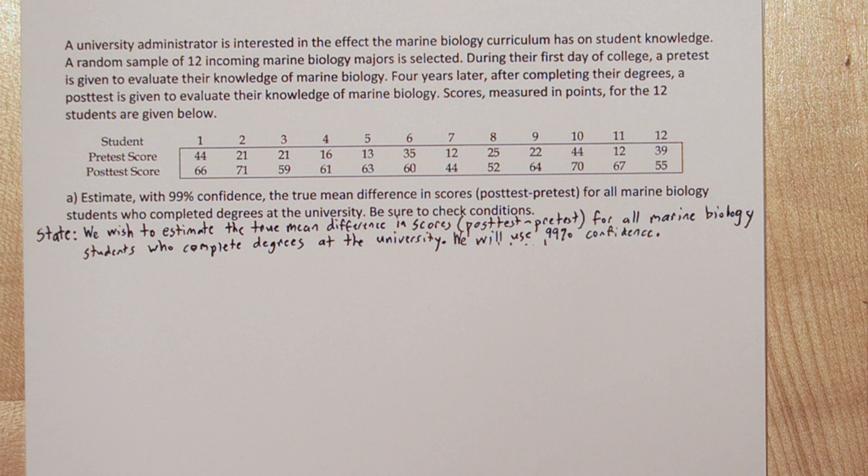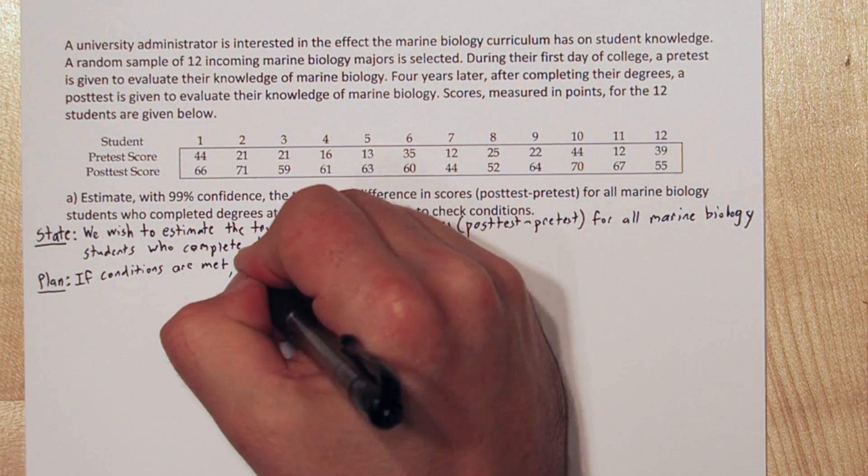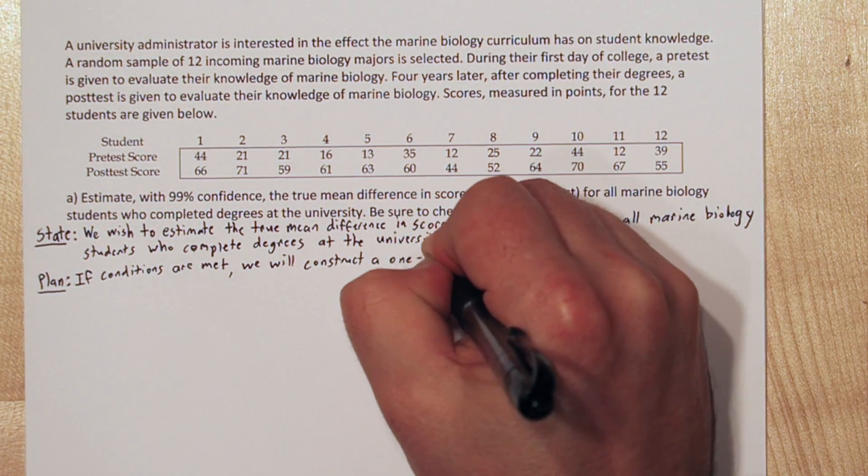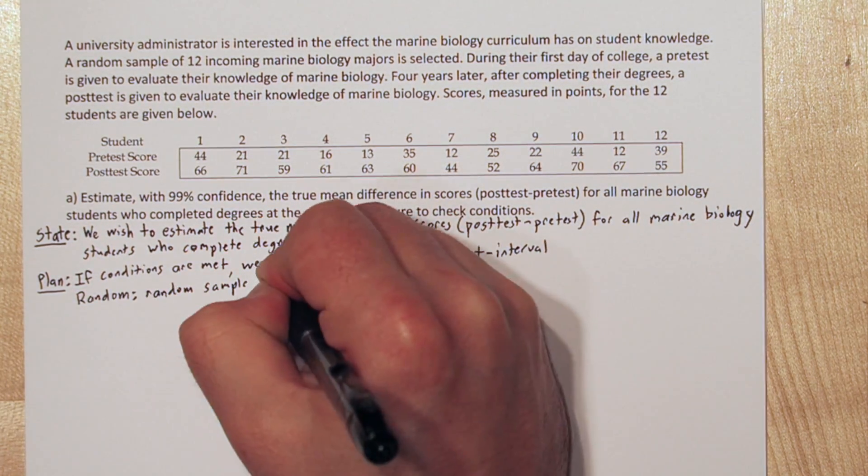Next, the plan step. If conditions are met, we will construct a one sample t interval. That's the inference method. We also need to check conditions. Random, it's a random sample of 12 students, so that's met.